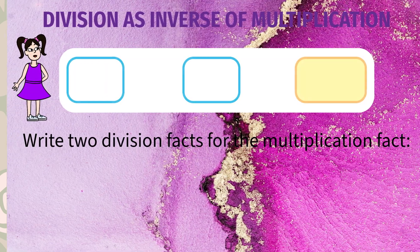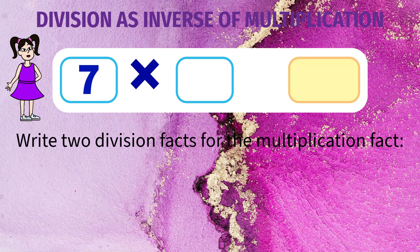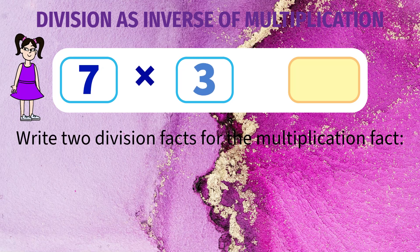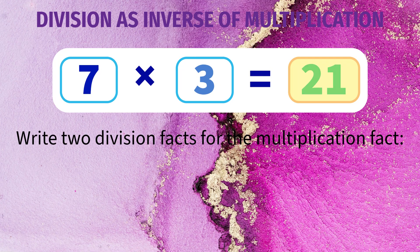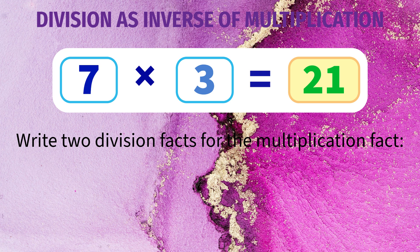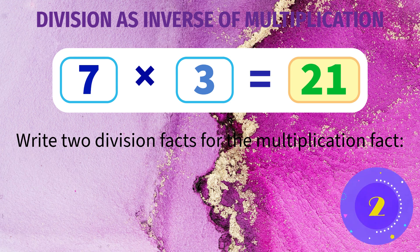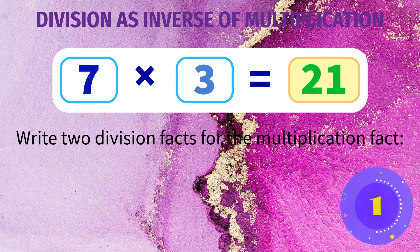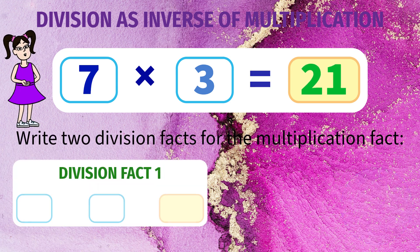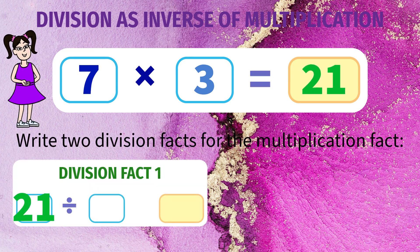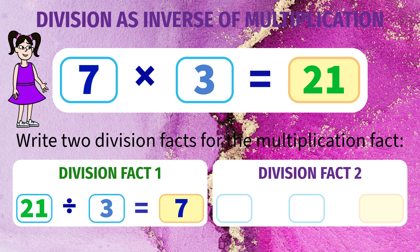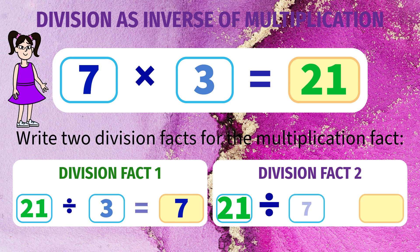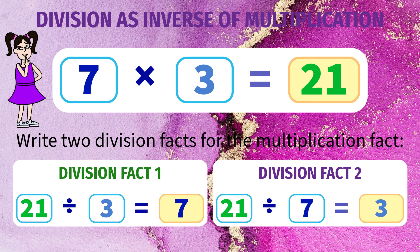Write two division facts for 7 into 3 equals 21. Here, the two division facts are 21 divided by 3 is 7, and 21 divided by 7 is 3.